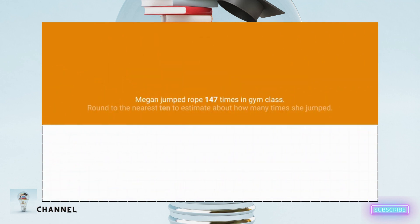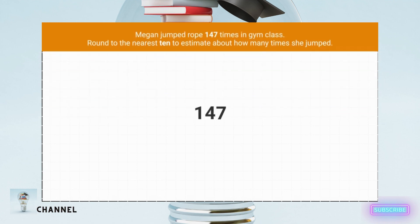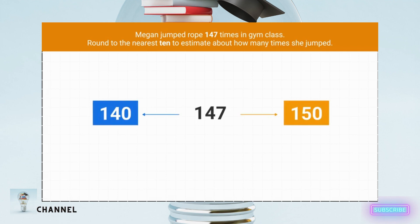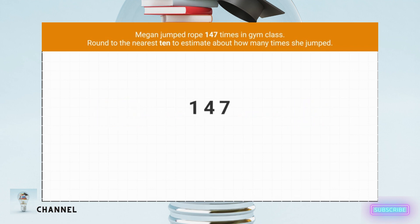Megan jumped rope 147 times in gym class. Round to the nearest 10 to estimate about how many times she jumped. The problem tells us that she jumped 147 times, so we'll focus on that number. It tells us we're rounding to the nearest 10, so we're trying to figure out if 147 is closer to 140 or 150. Since we want to round to the nearest 10, what digit should we circle? We'll circle the 4 in the tens place. Then we underline the place value to the right — the ones.